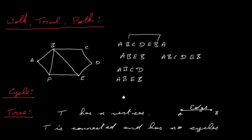Next we have three words: walk, trail, and path. A walk is a sequence of vertices and edges of a graph where we can repeat nodes and edges. So you're walking, for example, from here to C, to D, to E, to B, back to A again — we've repeated B, but that's okay. You can walk from A to B to E, or A to F to B to C, D, E, B, F, A, back to A again. These are all called walks.